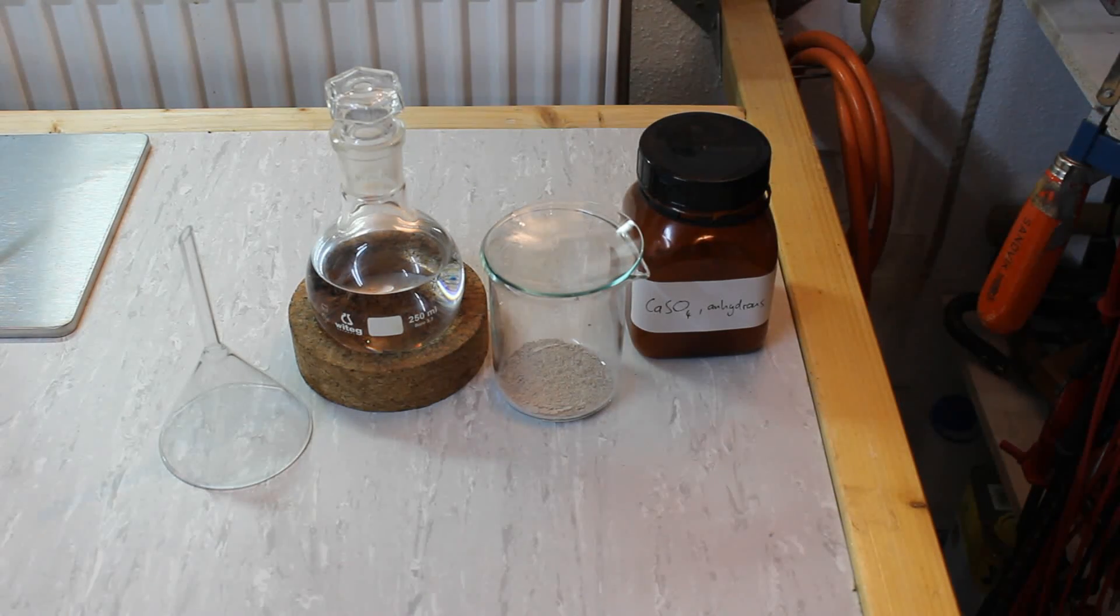So since we have roughly 250 milliliters of acetone here, we need 6.25 grams of anhydrous calcium sulfate. But to compensate for any impurities or water that might already be present in the calcium sulfate I have, I measured out 7 grams.